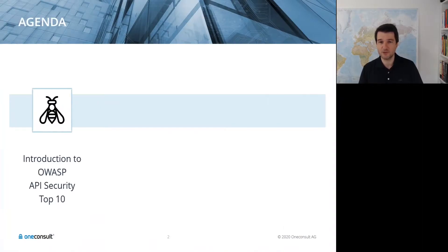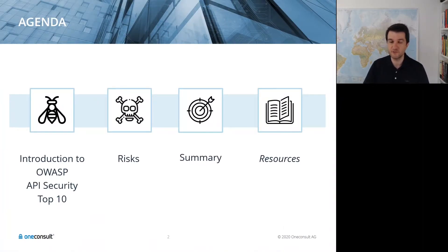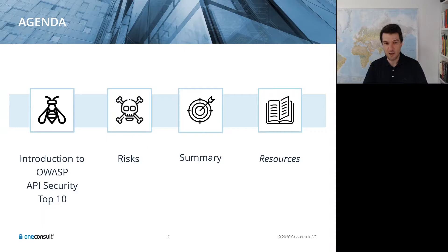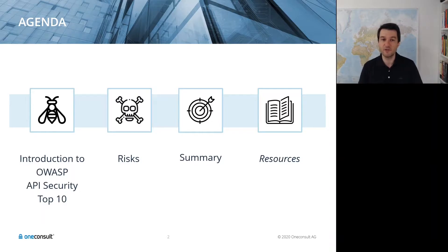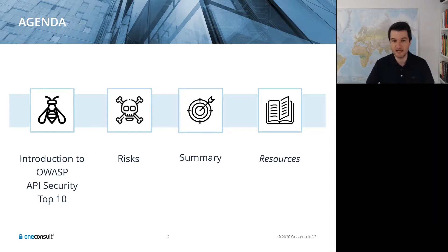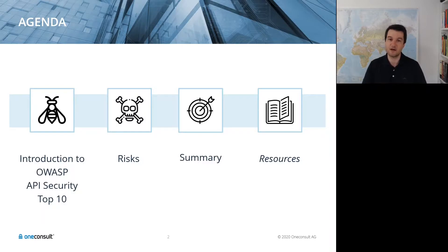I'll start by giving an introduction to OWASP as a project for those who don't already know them, and the fact that there was an original top 10 list aimed at web applications, and why there was a need for a new top 10 list aimed at API security that was published recently at the end of 2019. I'll then cover each of the risks on that list and conclude with a summary of root causes and how they might be mitigated, plus an appendix of resources.